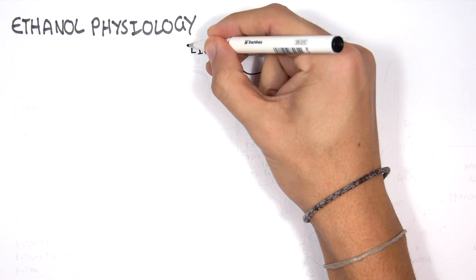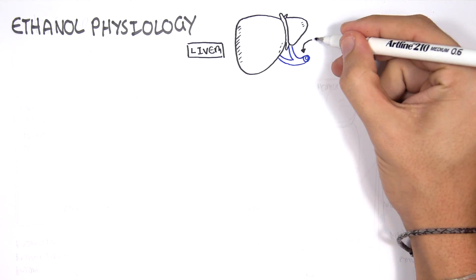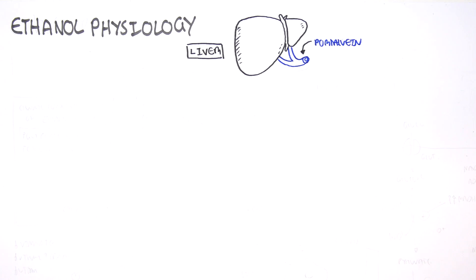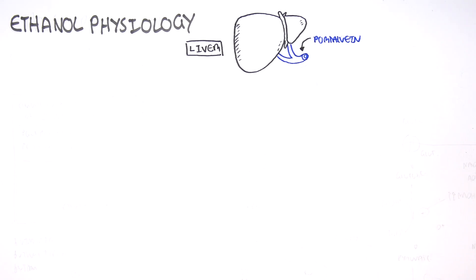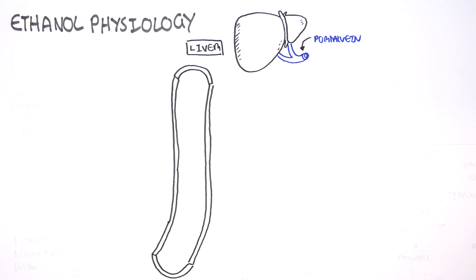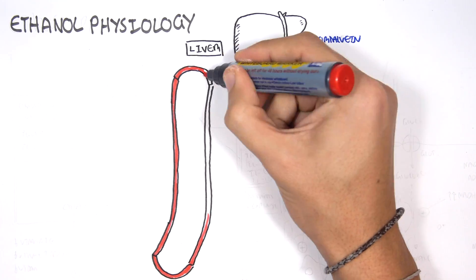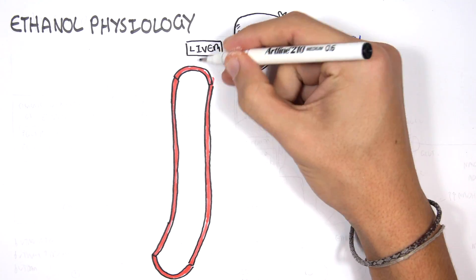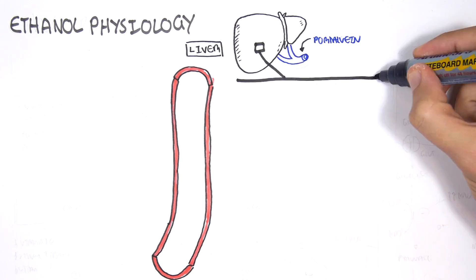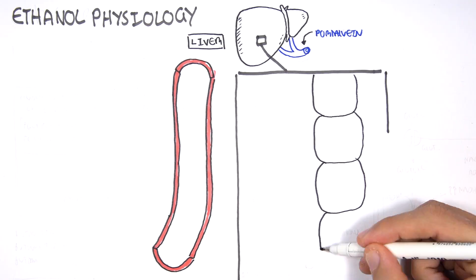We begin with the liver. The liver has a portal vein, which essentially drains all the GIT contents. The GIT drains into the portal vein, and the portal vein drains into the liver. Here we have the liver cells, also known as hepatocytes.